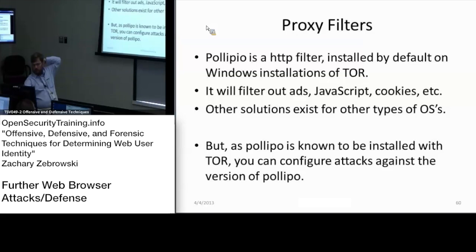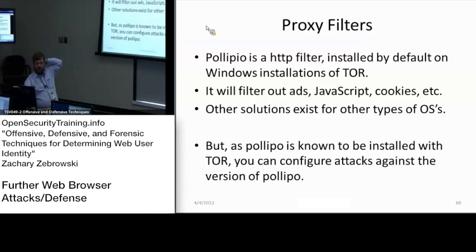Polipo, which I was mentioning before, is an HTTP proxy installed by default with Windows installations of Tor, which filters out JavaScript and other things. But because Polipo is known to be installed with Tor, that can be used as an attack vector.